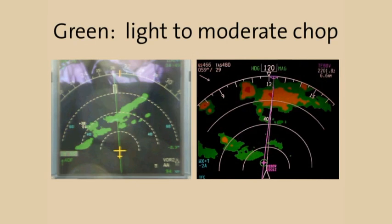If you believe the radar is showing too little, we encourage you to experiment with what is being displayed. In this case, when the crew penetrated the green area, they experience light to moderate chop.